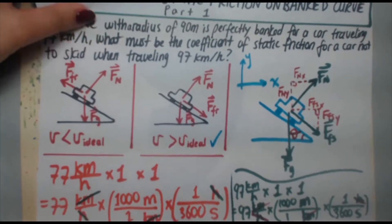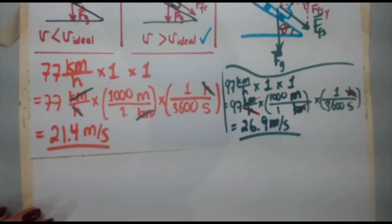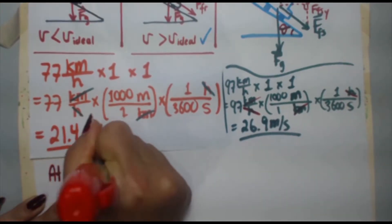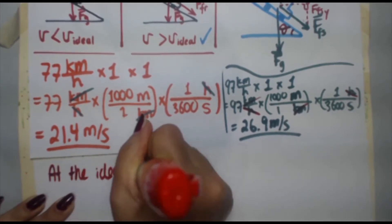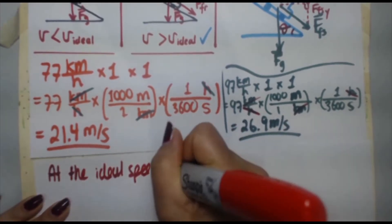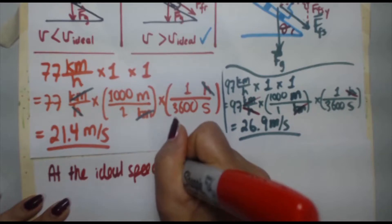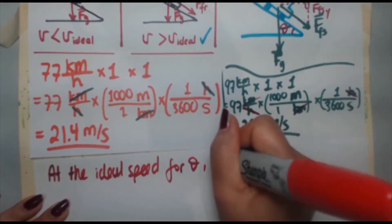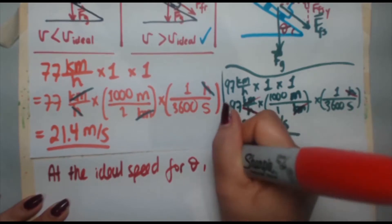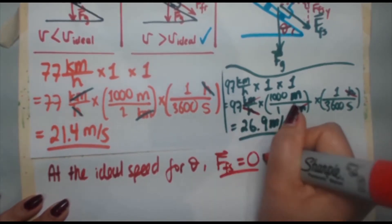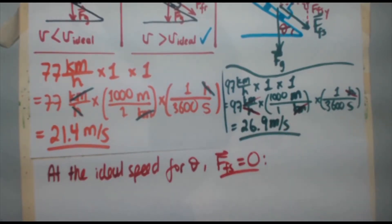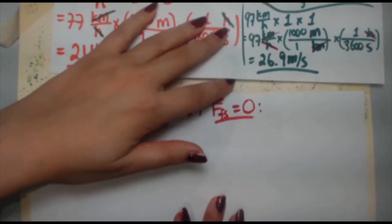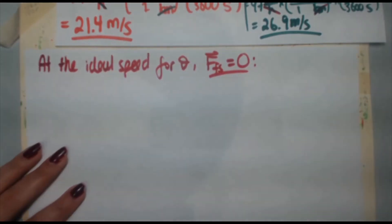So let's make a note: at the ideal speed, to find angle theta, the static friction force equals zero. That's how we're going to calculate the banking angle. Let's do the calculation now.